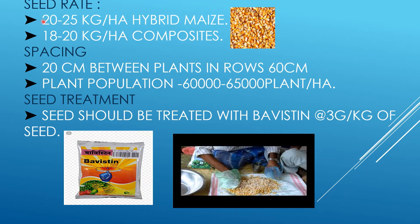The seed rate for hybrid maize is 20 to 25 kg per hectare, and 18 to 20 kg per hectare for composites — around 7 to 8 kg per acre. Spacing is 20 cm between plants and 60 cm between rows, maintaining a plant population of 60,000 to 65,000 plants per hectare to increase yield. For seed treatment, seeds should be treated with Biowiston at the rate of 3 grams per kg of seeds, then mixed and transplanted in the main field.